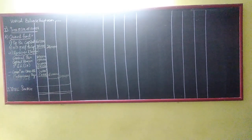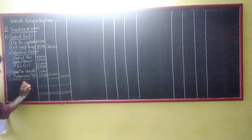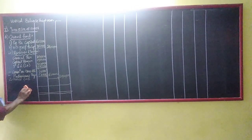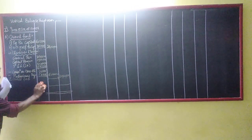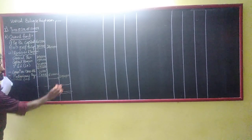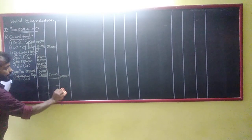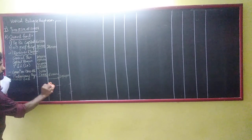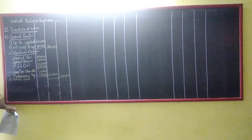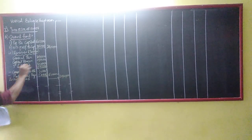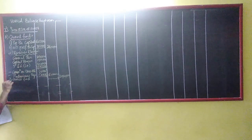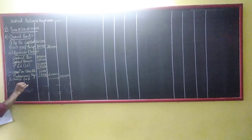Yes? Comfortable. Very good. Now own fund — how much? 30 lakhs. We have to have heading number B. B is borrowed fund. Powered fund — Borrowed Fund.